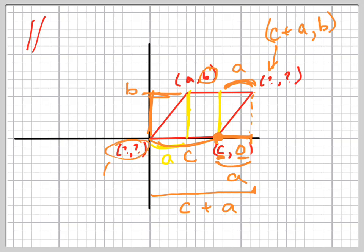And this point right here, obviously, is just zero comma zero. So your four points are zero comma zero, C comma zero, A comma B, and C plus A comma B. That's how you do that problem.